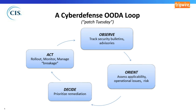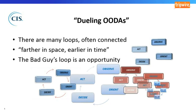History tells us that bad guys can execute this loop faster than defenders. It's not because they're better or smarter — they don't worry about system breakage and cranky users and enterprise complexity, and they can be very targeted. But we can all improve dramatically in the way we manage these loops. This patch cycle can be hours to days to months to never, depending on the complexity and scale of the defensive enterprise. We can never win this one 100% of the time, but we can get a lot better.